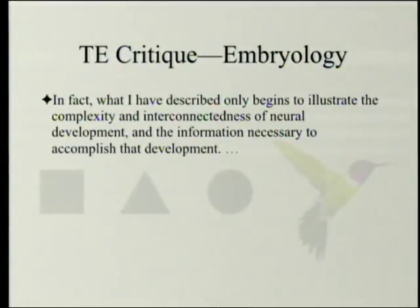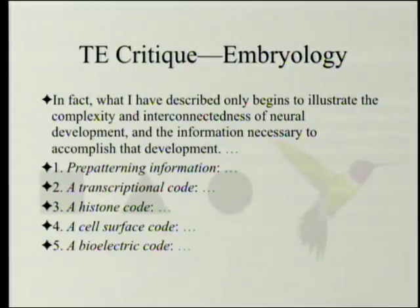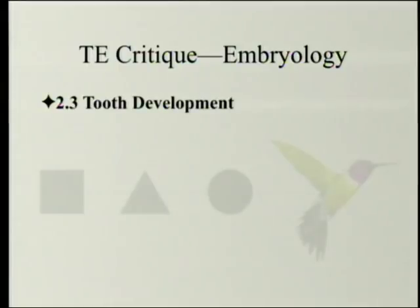What has been described only begins to illustrate the complexity and interconnectedness of neural development. There is pre-patterning information, a transcriptional code, a histone code, a cell surface code, and a bioelectrical code — each with its own explanatory paragraphs in the full text.